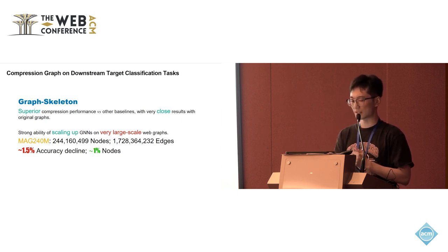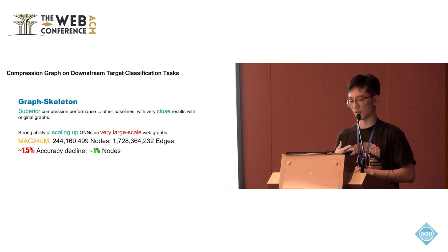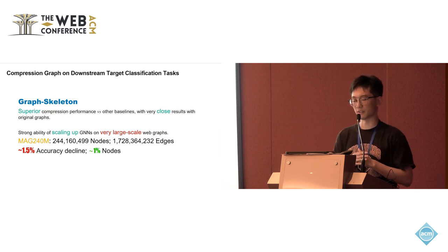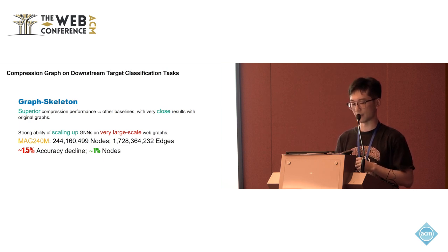We conduct the downstream classification task based on the compressed graphs for multiple datasets. The results show that Graph Skeleton achieves better compression performance against other baselines, with very close results to the original graphs. Specifically, it presents a very strong ability to scale up on very large-scale graphs. For example, on datasets with 240 million and 40 million nodes, our method yields only a one-point-five percent decline in performance using near one percent of the nodes of the original graph.